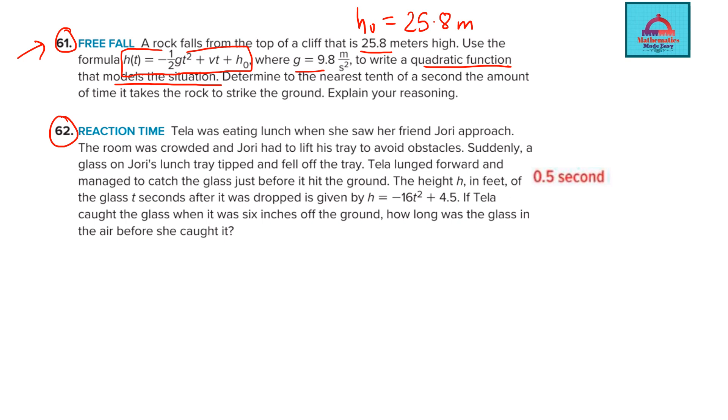So we will proceed in a similar manner like we did for the previous question 50 and just substitute these values in this given equation. We will get our answer for the quadratic function. Also, you need to determine to the nearest tenth of a second. So you need to round off the amount of time it takes the rock to strike the ground. That means the variable you need to find is the time and it is an approximate time you need to give also explain your reason.